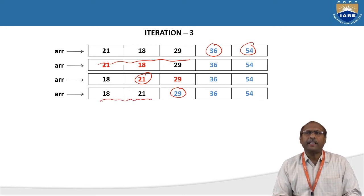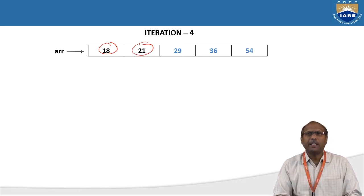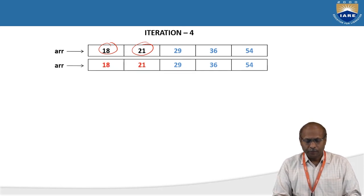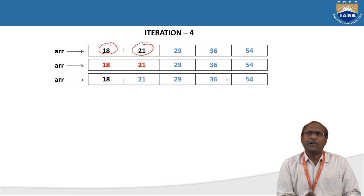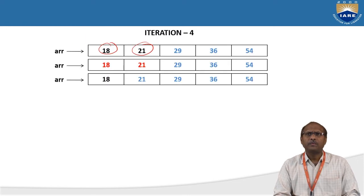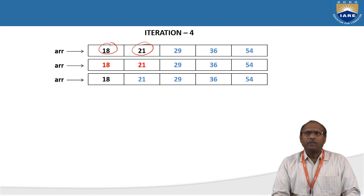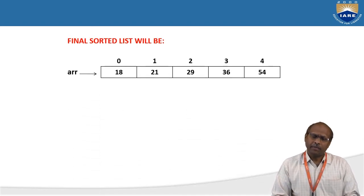Now the remaining elements are 18 and 21, so go to the fourth iteration. In the fourth iteration, compare 18 and 21: 18 is smaller than 21, no need to do any interchange. Stop. At the fourth iteration, all elements are in arranged order. Finally, the sorted array will be 18, 21, 29, 36, and 54.